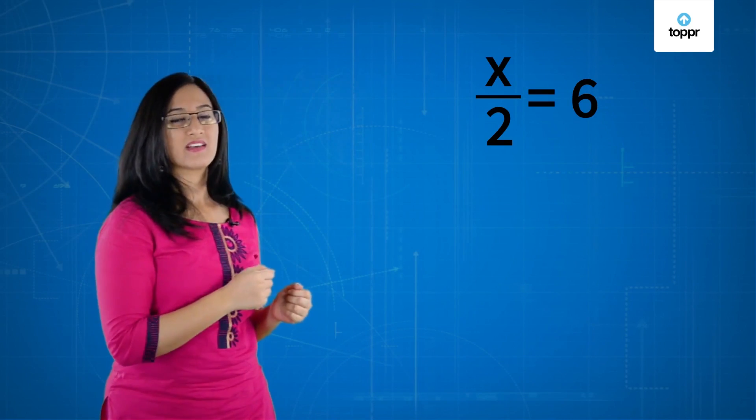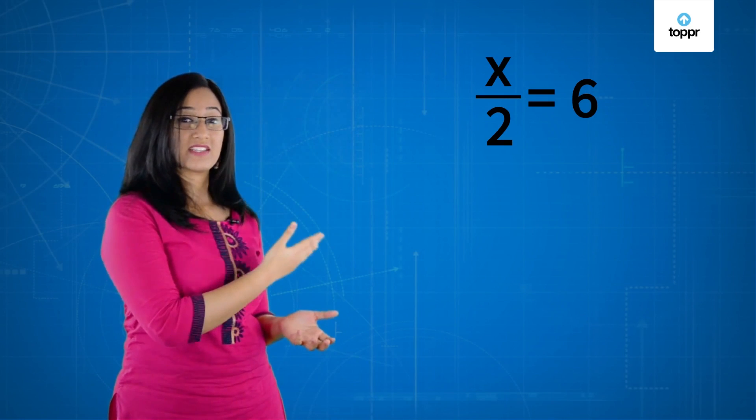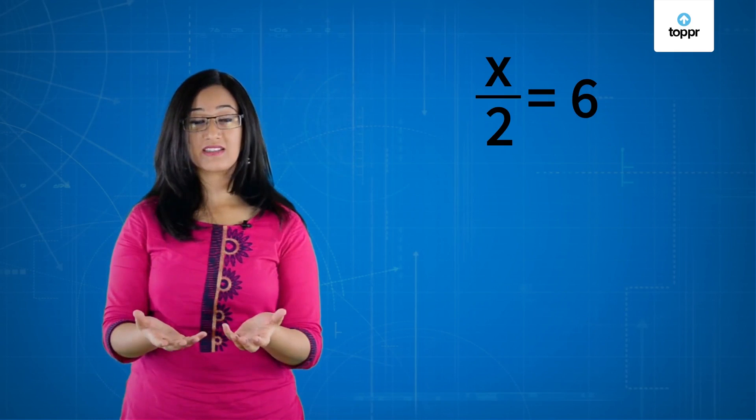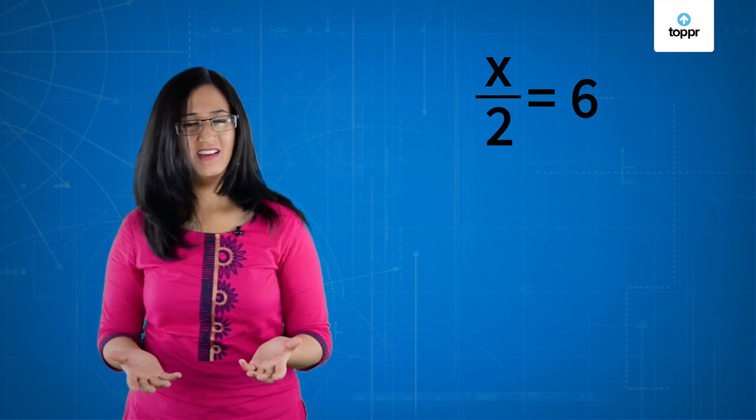Here's another equation. x by 2 is equal to 6. You can see that there is an extra number along with the x. But, can you remove it with addition or subtraction? No, right?